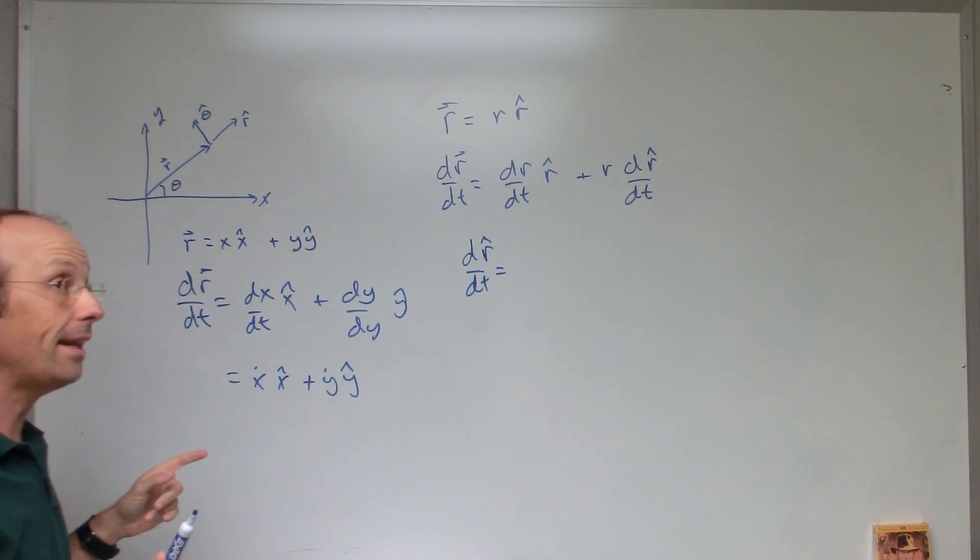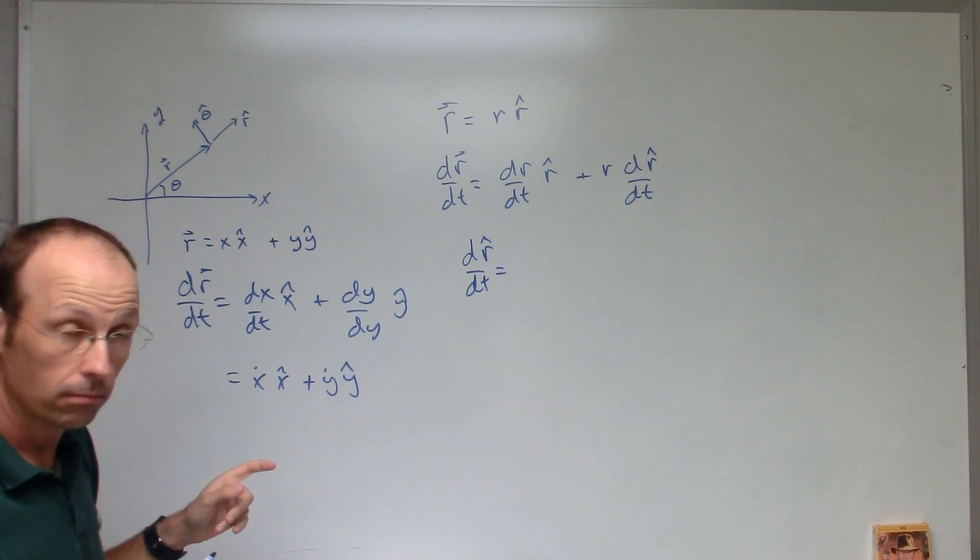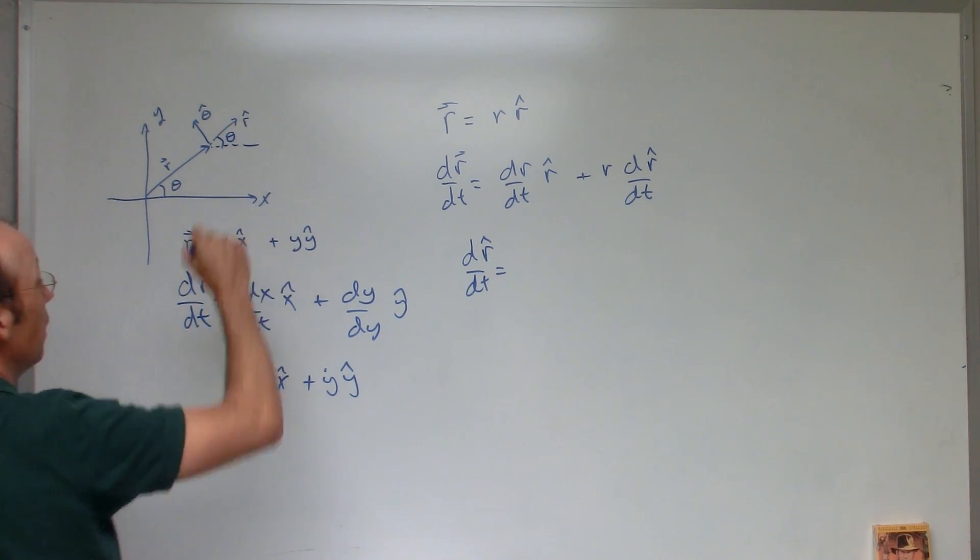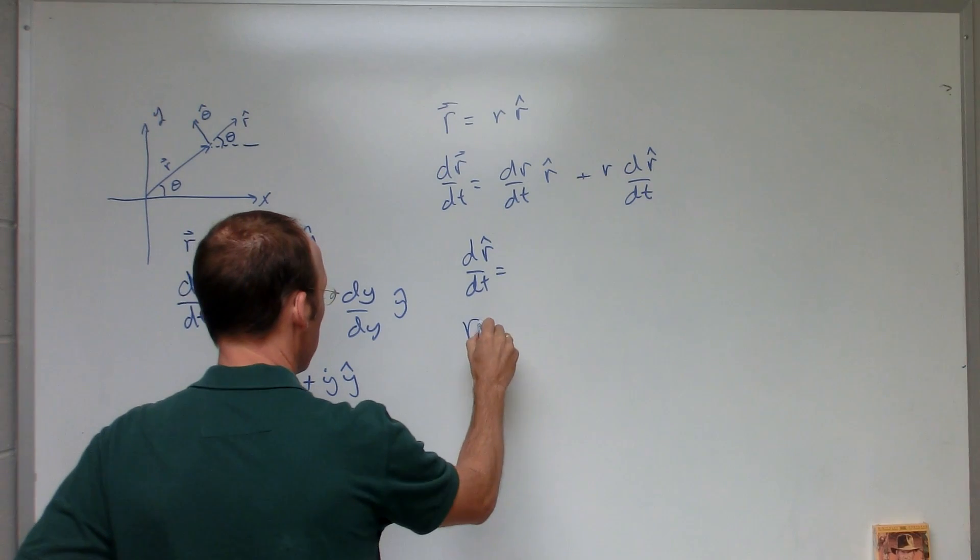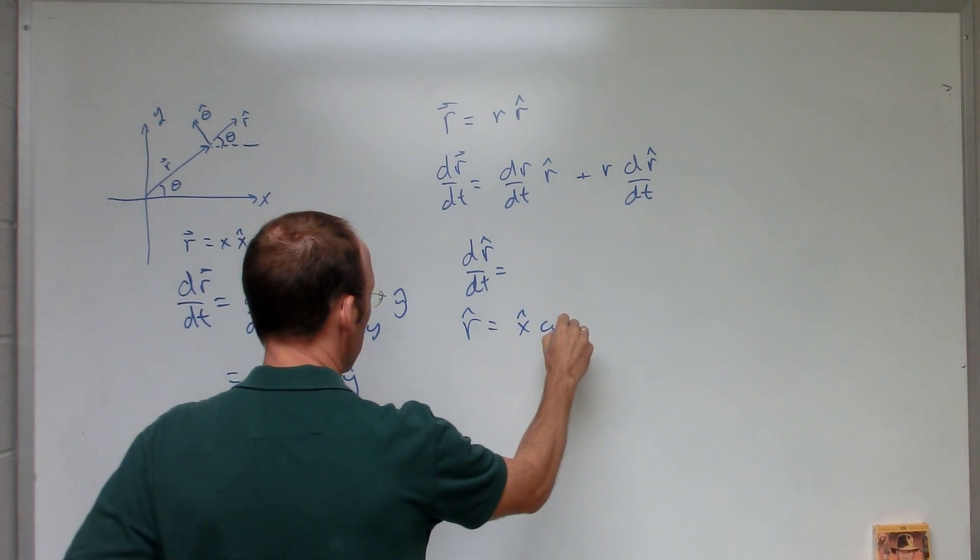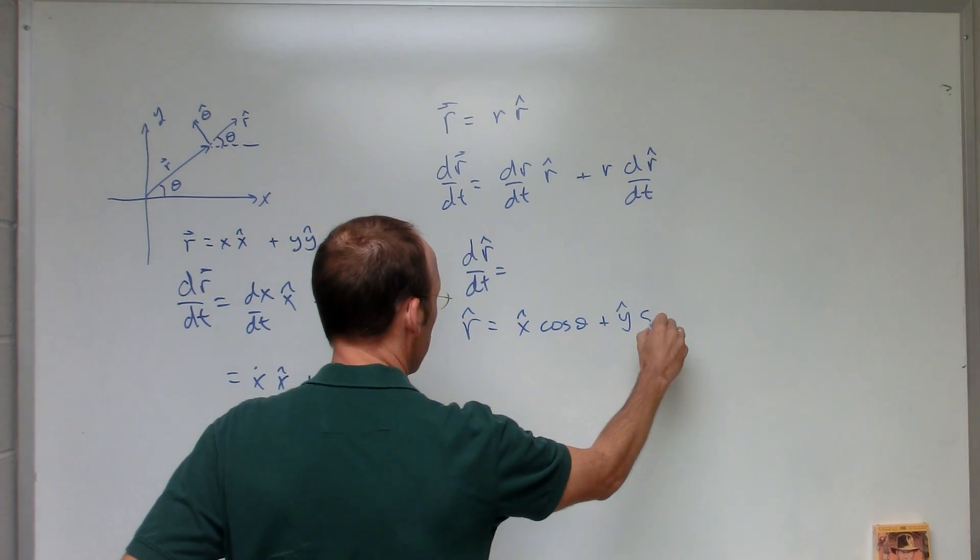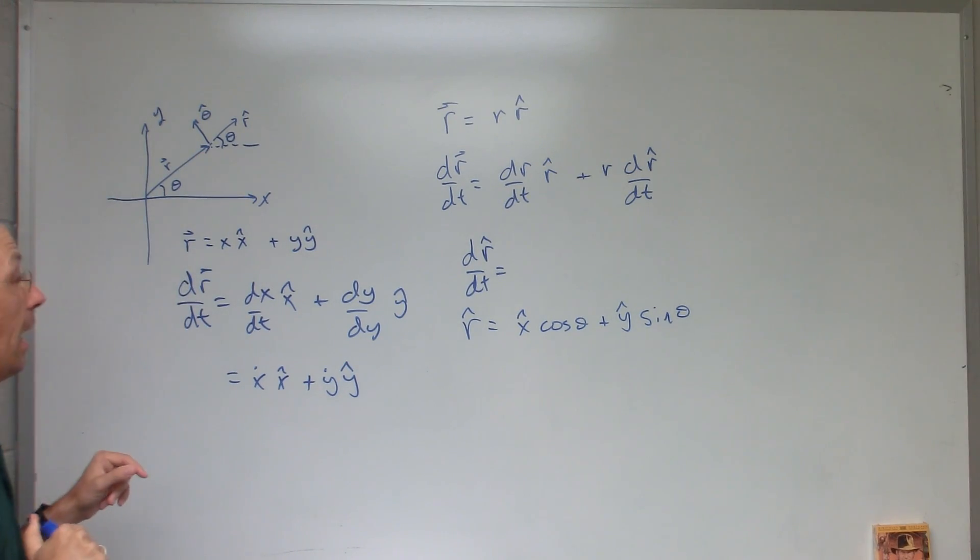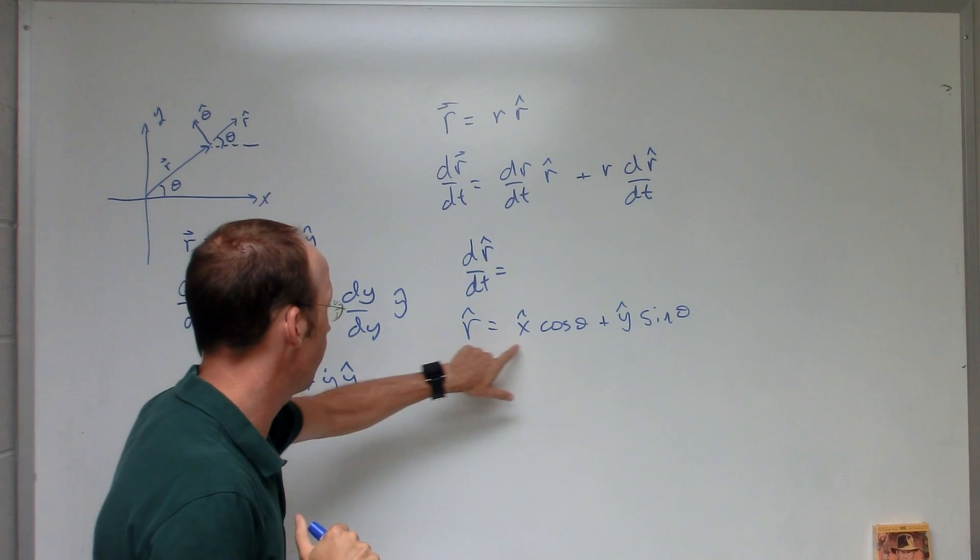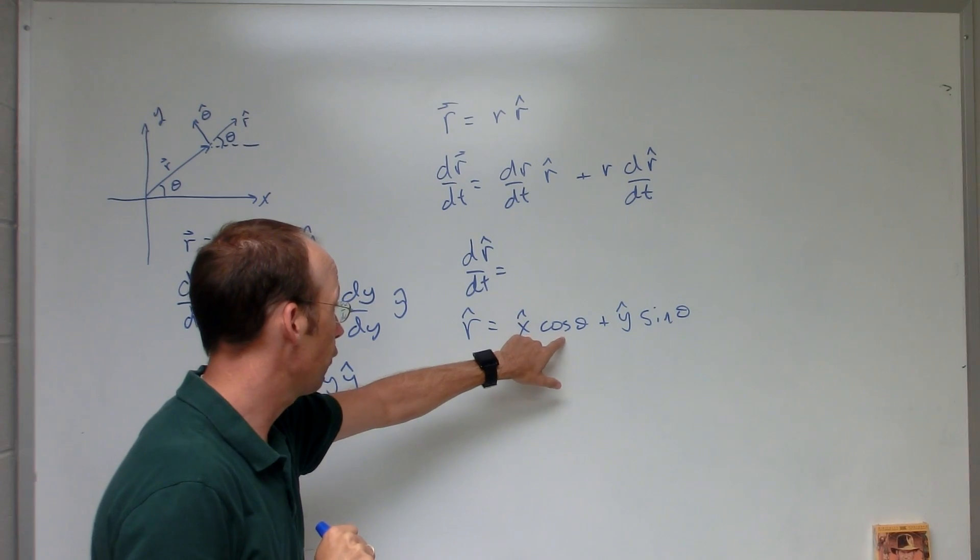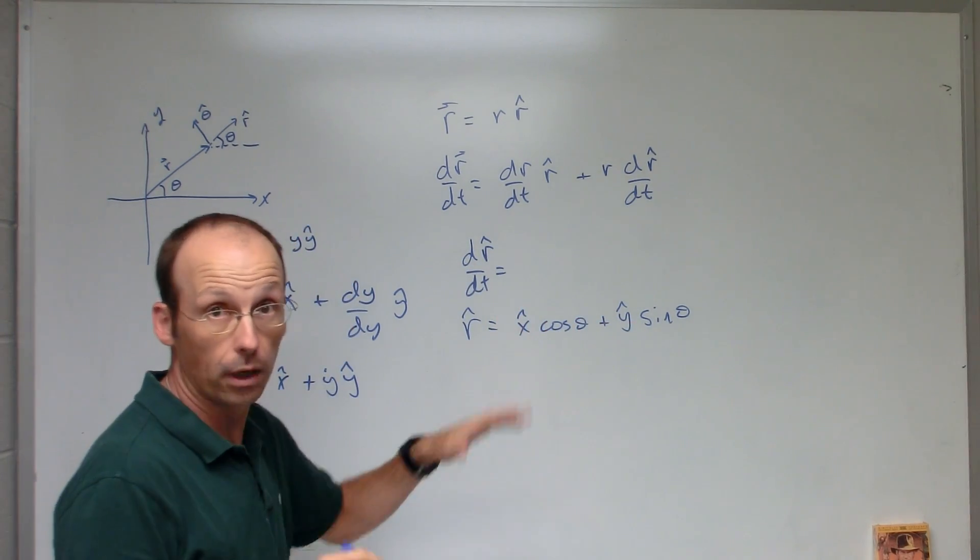Well, when in doubt, switch to things that you know. So if I look at this, r hat's right there, and that's an angle theta. Then I can write r hat as x hat cosine theta plus y hat sine theta. I can write it in terms of the x hat and y hat coordinates. And you can check to make sure this is still a unit vector. If I take the magnitude of this, I get the square root of cosine squared plus sine squared. It is 1, so it's good.